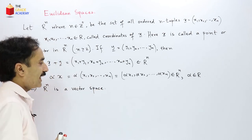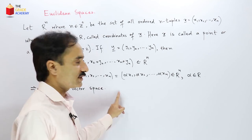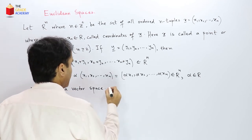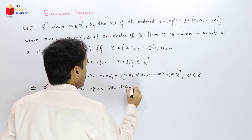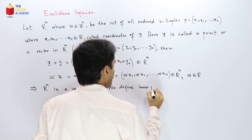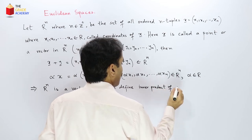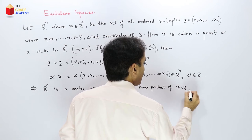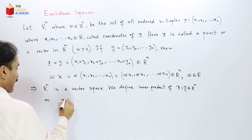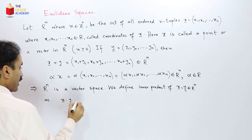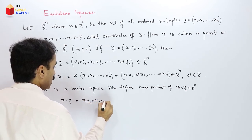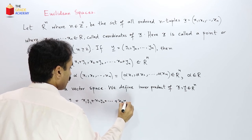So on this vector space we define a term which is called an inner product. We define inner product of two elements x and y belonging to Rn as x dot y which is equal to x1y1 plus x2y2 up to plus xn yn.